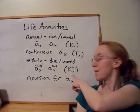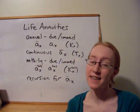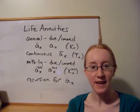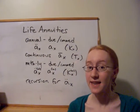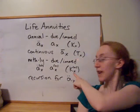but actually k upper m of x. We care about, to the nearest 1 over mth of a year, how far the person lived. So the last payment that's made in this case is going to be a 1 over m dollar payment made at time k upper m of x.